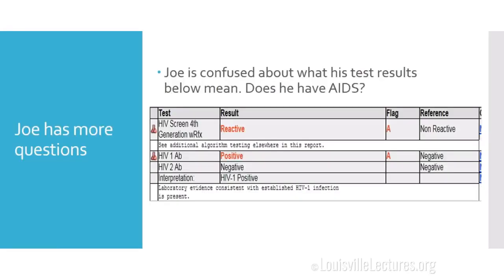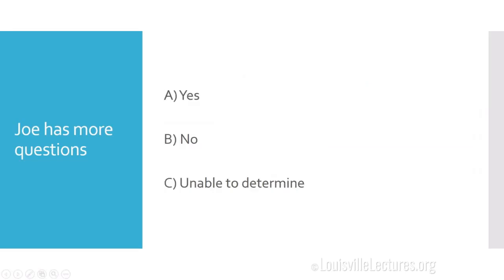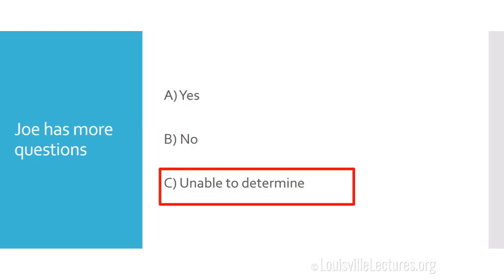Coming back to Joe — he's confused about his test results and wants to know if he has AIDS. His HIV fourth generation ELISA came back positive, and the Genius confirmation test came back positive for HIV-1 and negative for HIV-2, with the interpretation confirming a truly positive test. But can you answer whether he has AIDS? You cannot, because you need to know his CD4 count.